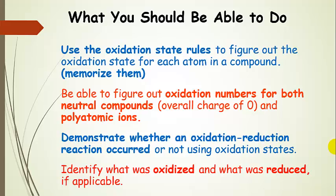So what you should be able to do: use the oxidation state rules to figure out the oxidation state for each atom in a compound — you do need to memorize these rules. You should also be able to figure out oxidation numbers for both neutral compounds and polyatomic ions. And you want to be able to demonstrate and explain whether an oxidation reduction reaction occurred using these oxidation states, and identify what was oxidized and what was reduced, if applicable.